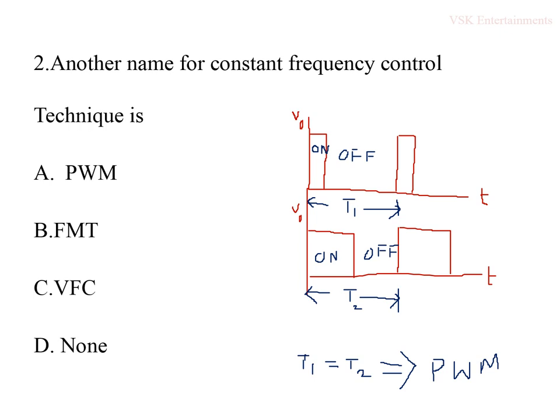The second question: another name for the constant frequency control technique. Options are PWM (pulse width modulation), frequency modulation technique (FMT), variable frequency control, and none. The constant frequency control technique is also known as PWM.